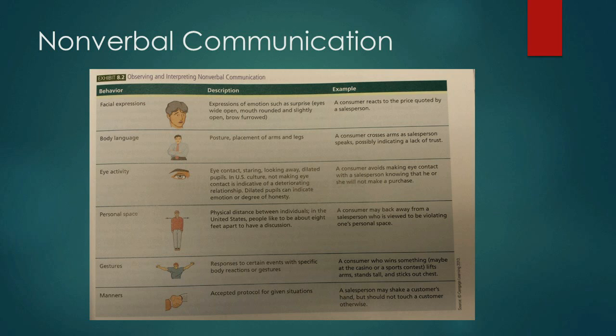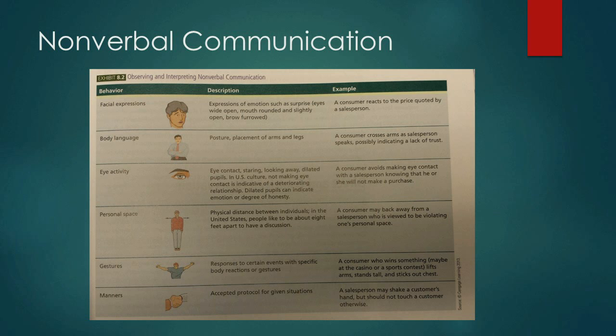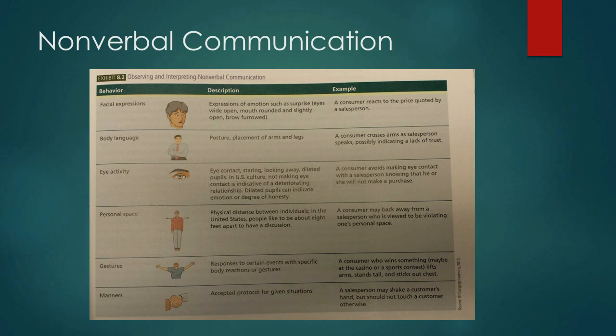So much of our communication is nonverbal. You're looking at my face and you can see — if I put on a happy face, that tells you one thing; a sad face tells you something different. We can look at all forms of nonverbal communication, including facial expressions, body language, eye activity, and personal space. For example, if I cross my arms, that's a very different message than if I sit open. If I look away while talking, you probably wouldn't believe me. Eye observation is important, and personal space matters — if I'm in your face, most people lose the message.